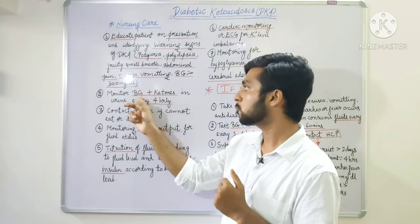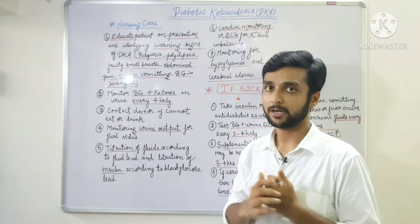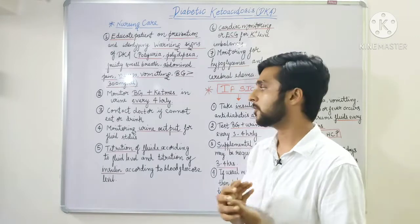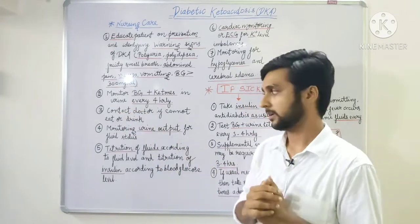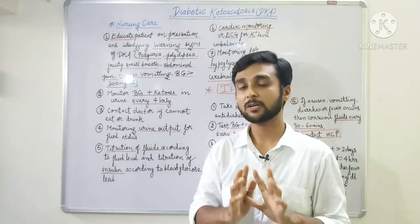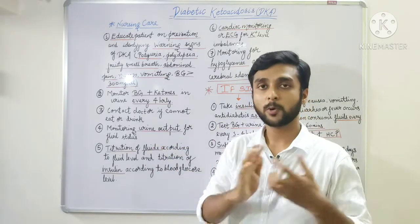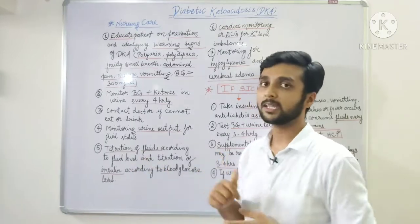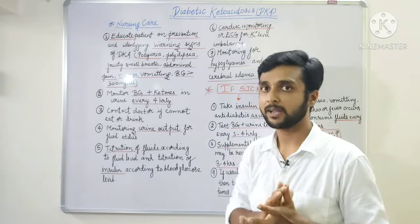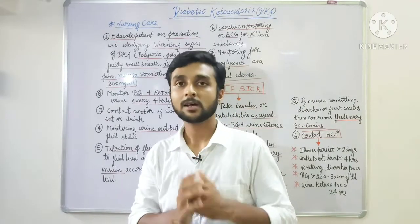Next, check blood glucose level and ketones in urine every four hours. If the patient doesn't eat or consume fluids, contact the doctor. Check the patient's urinary output and fluid status because of polyuria. When administering 0.9% NS and insulin, titrate or manage the doses based on the patient's fluid level and blood glucose — monitor this closely.